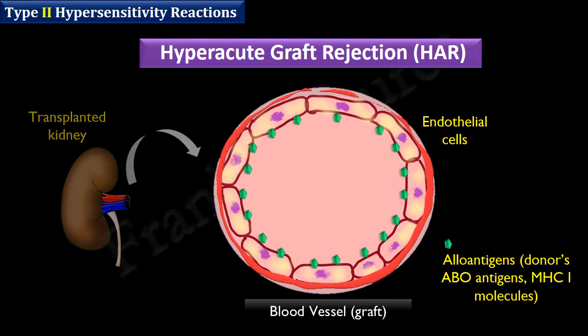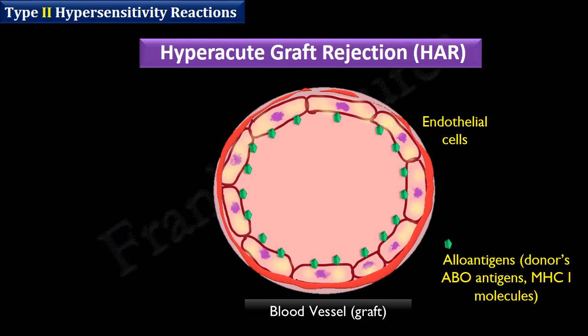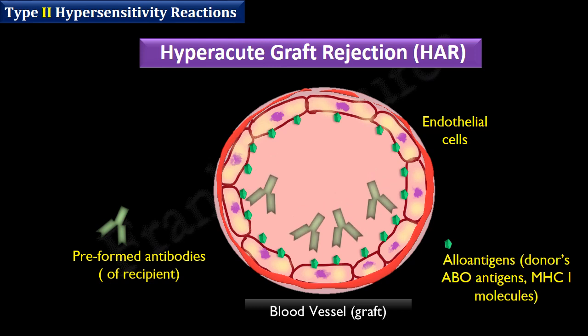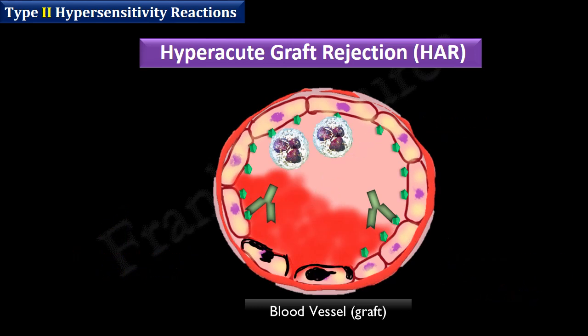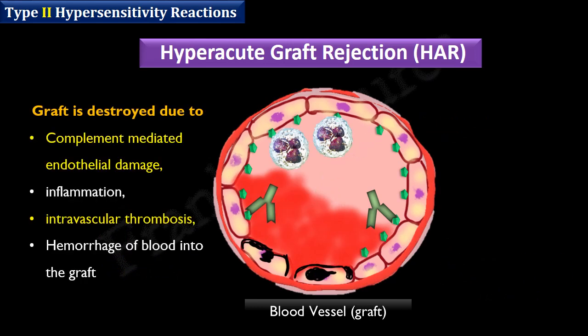When pre-existing antibodies from the recipient's circulation bind to these allo-antigens, they rapidly initiate the classical pathway of complement activation. The graft is destroyed within minutes by complement-mediated endothelial damage, inflammation, intravascular clot formation, and hemorrhage of blood into the graft.